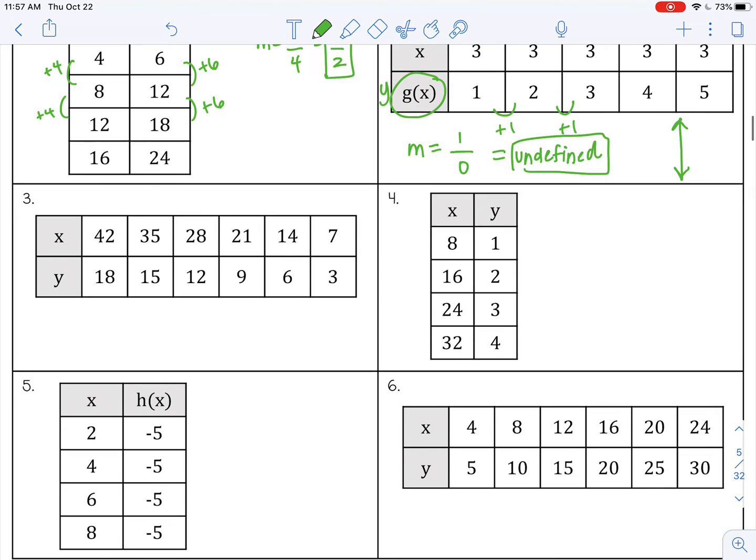All right, let's see how we did. So on number three, let's see, I'm subtracting three here, and I'm subtracting seven here. So my slope would be negative three over negative seven, which reduces to, well, it doesn't reduce, but negative divided by negative is a positive three over seven.